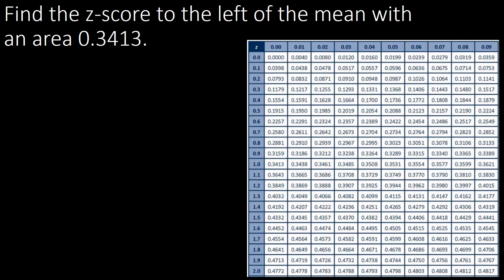Find the z-score to the left of the mean with an area of 0.3413. Since this is to the left, we expect a negative z-score. Since the area is bounded by the mean, we locate 0.3413 directly on the z-table. The first component is 1.0 and the second is 0.00. Combining gives negative 1.0 as the z-score.